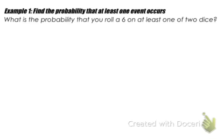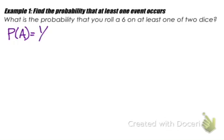In example 1, we're going to find the probability that at least one event occurs. What is the probability that you roll a 6 on at least one of the two dice? The probability of event A, which is rolling a 6, would be 1/6, because there are six sides — so there's one chance that you can roll a 6 on that specific die.